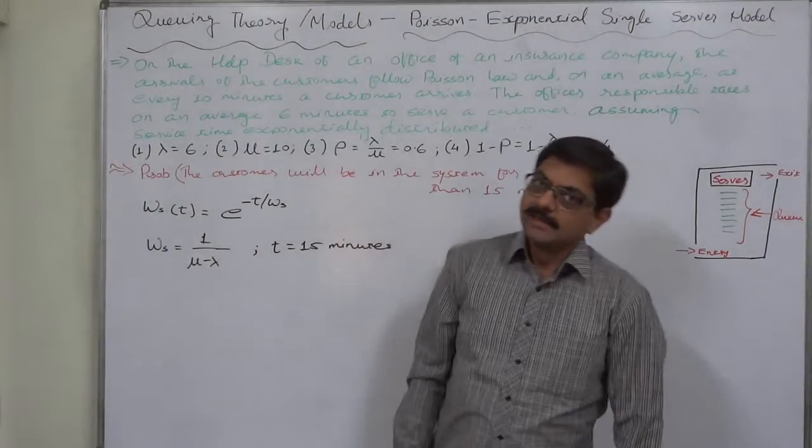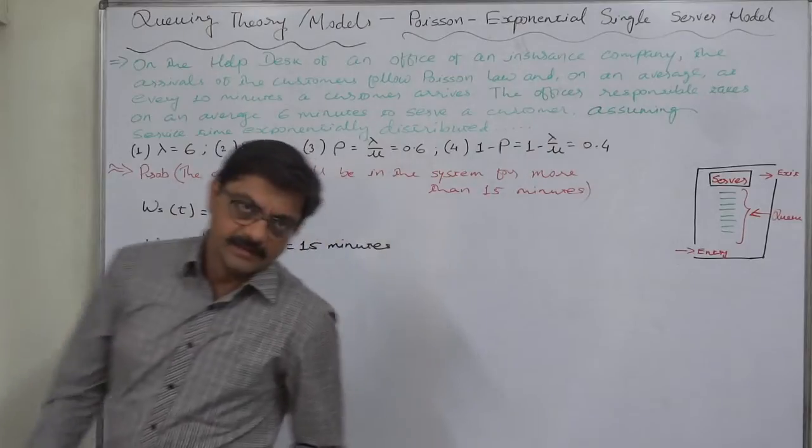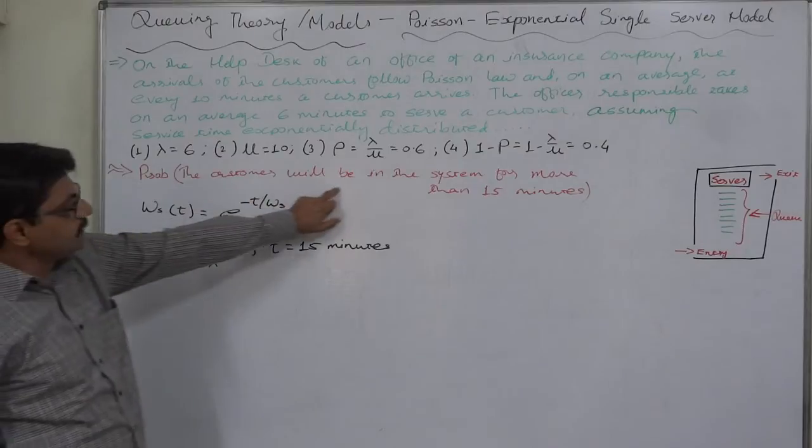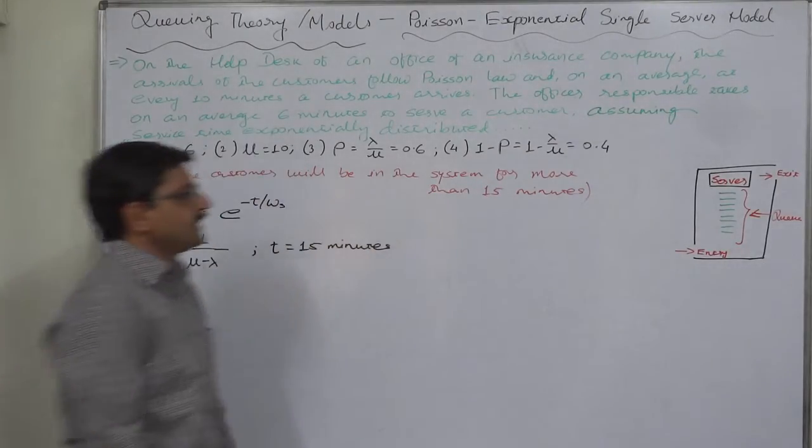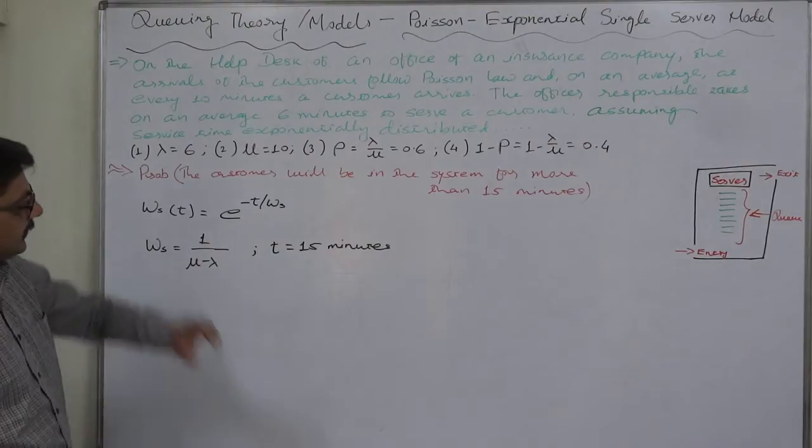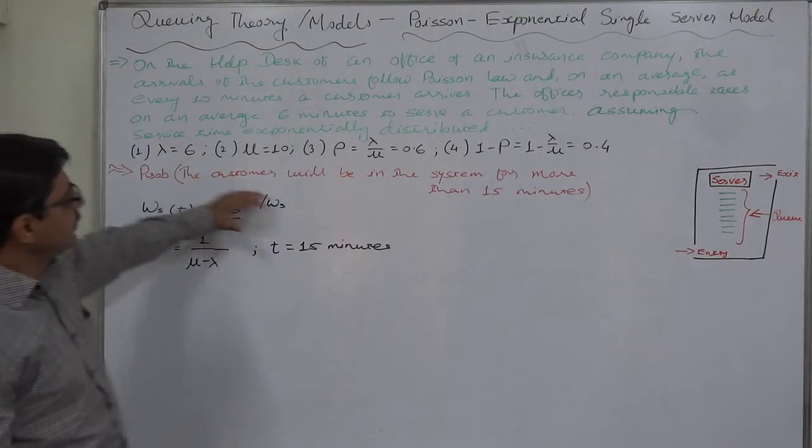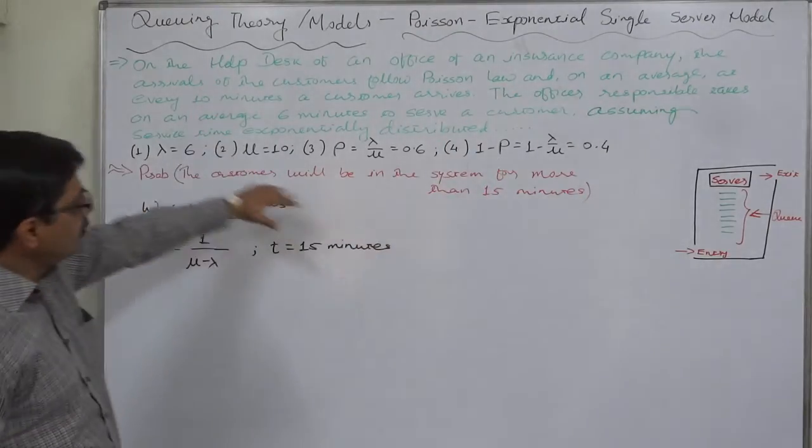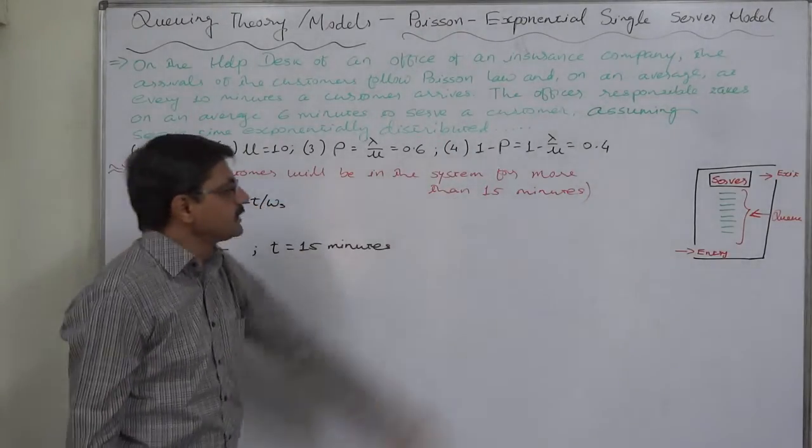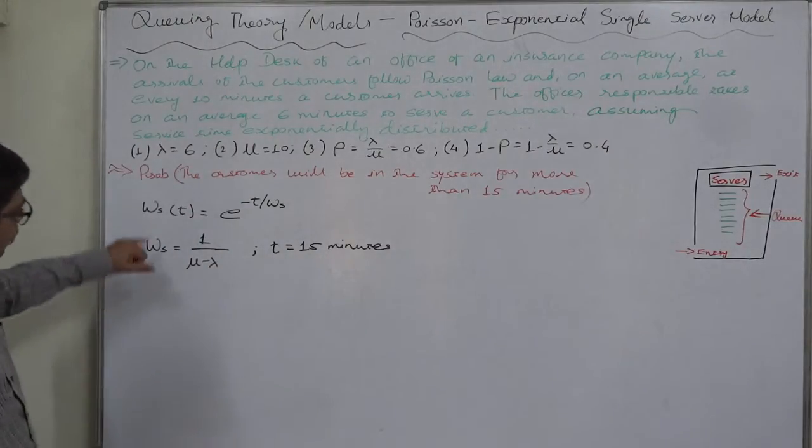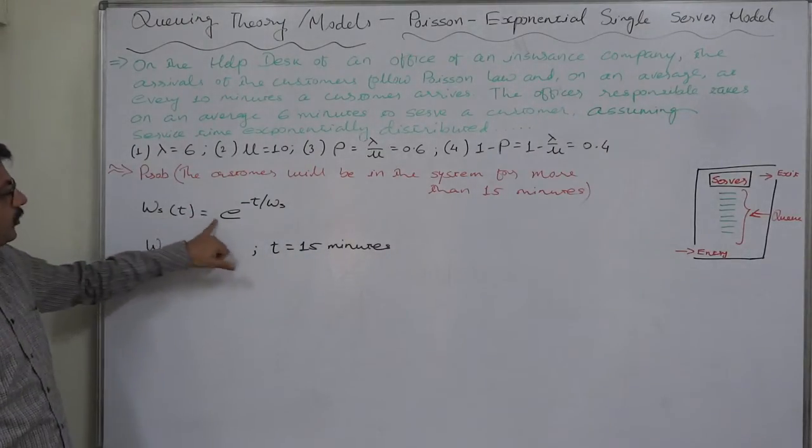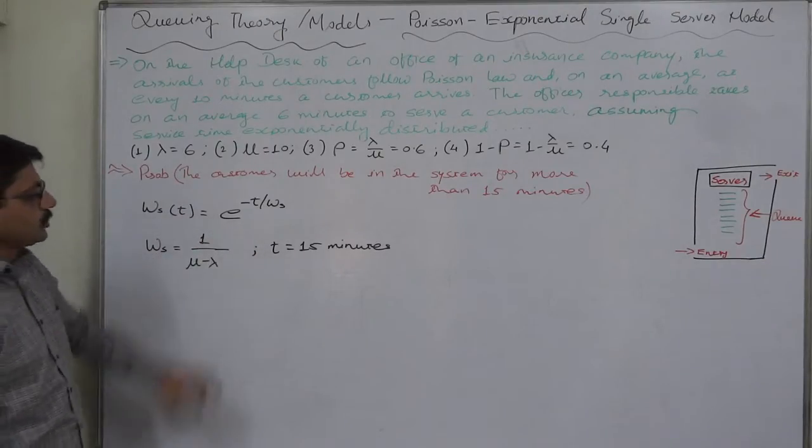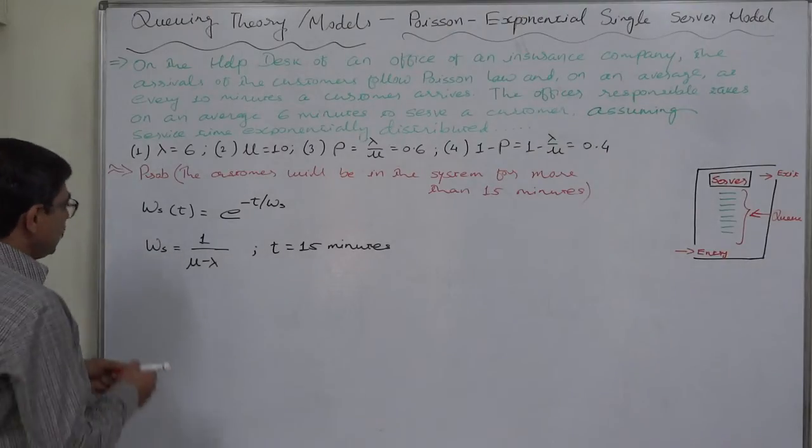Hello and welcome. The last topic in the same case: what is the probability that the customer will be in the system for more than 15 minutes? In the previous lecture we discussed the probability that the customer will be in the queue for more than so and so minutes. Now the customer will be in the system for more than 15 minutes. The difference is in the formula: rho is in multiplication of e.